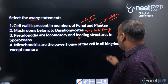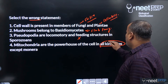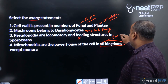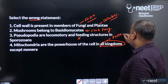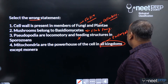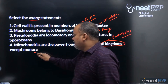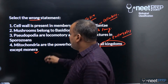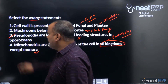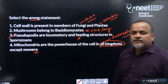Fourth statement — mitochondria are the powerhouse of the cell in all kingdoms except Monera: yes, all kingdoms here means all eukaryotes, not prokaryotes like Monera, so this statement is correct. Therefore the wrong statement is the third one, and the answer will be option three.